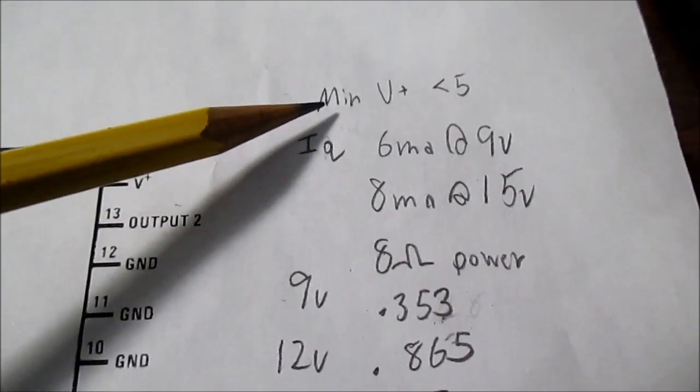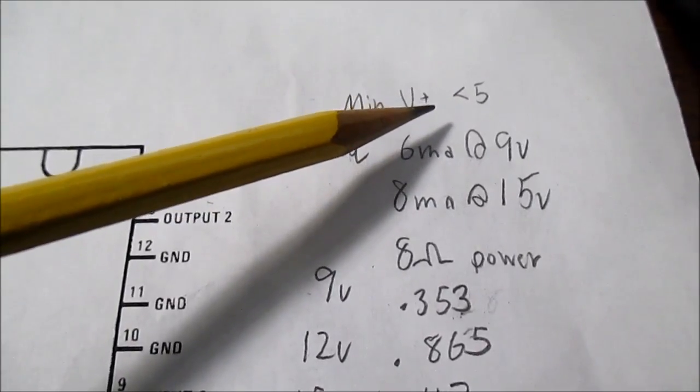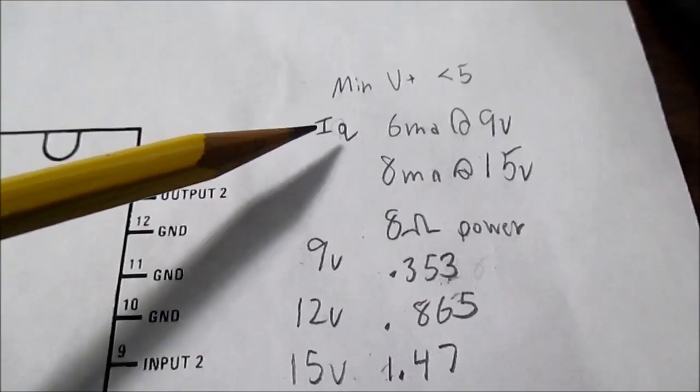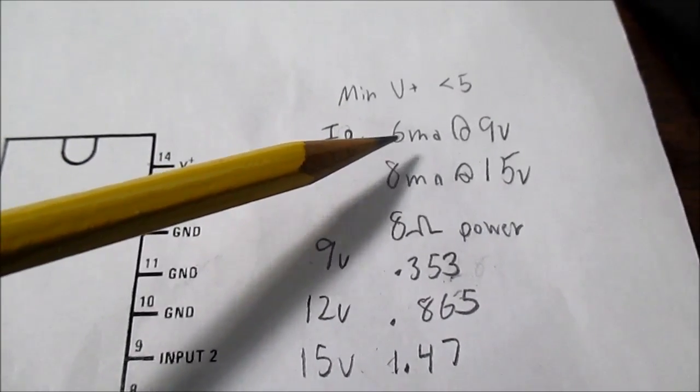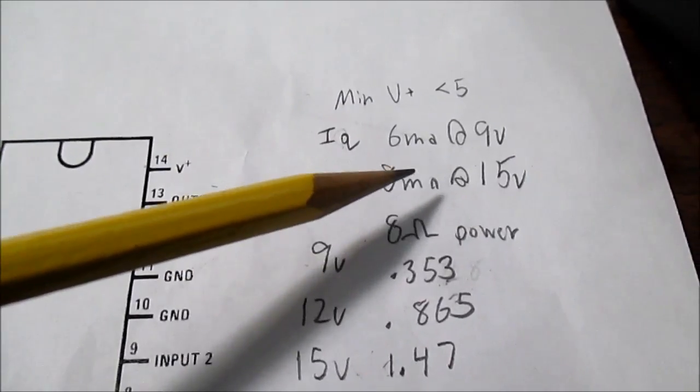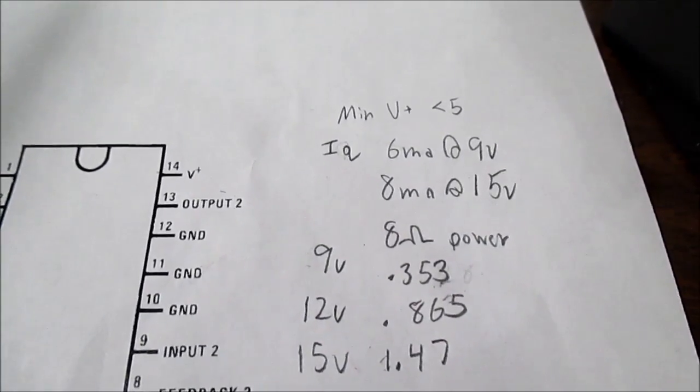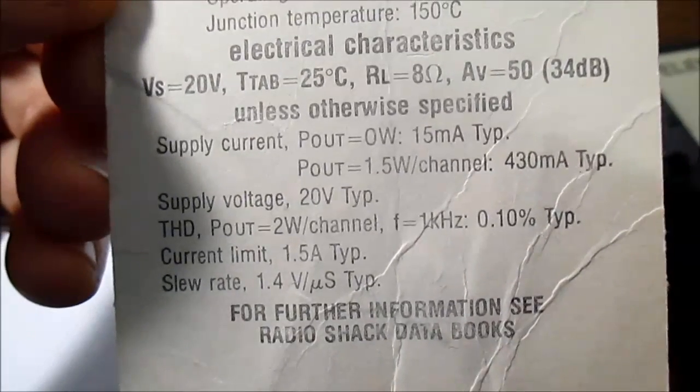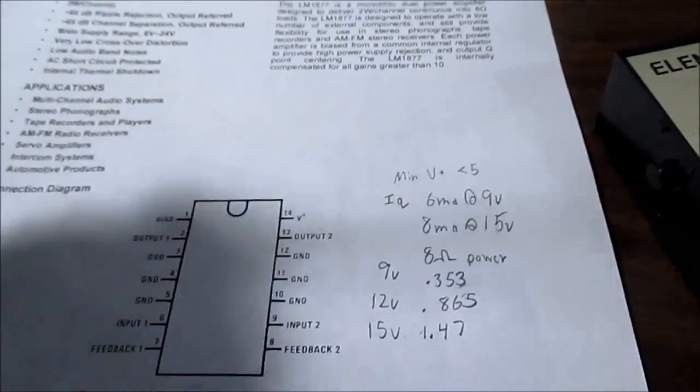Some other measurements I've taken. The minimum supply voltage, well, it says 6 volts. But it went under 5 volts down to 4.5 volts before it started to cut out. So it does work on pretty low voltages. Quiescent current, that just means the amp is powered up with no output signal. And it was drawing 6 milliamps at a 9 volt supply and 8 milliamps at 15 volts. So the quiescent current is pretty low. It would be a good amplifier to use with batteries. Here's some more information on the back of the RadioShack card. It says 26 volts max. Well, the datasheet says 24, so a little discrepancy there.